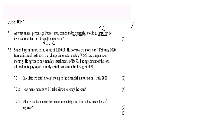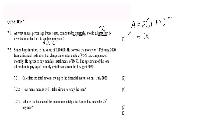The formula we apply is the compound interest formula, because this is a lump sum being invested and left in the bank for six years — no monthly installments or regular payments are made. So our principal amount is x, our accumulated amount is 2x, and the interest is represented as i over 4 since it's compounded quarterly.